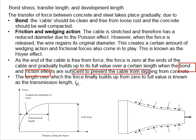When bond and friction effects are sufficient to prevent the cable from slipping from concrete, the length over which the force finally builds up is known as the transmission length.